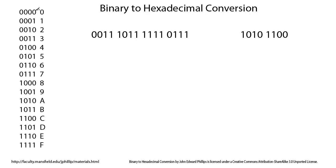You can do this easily by starting with the ones column — just count 0, 1, 0, 1 all the way down. The next column over is the twos column: count with two zeros, two ones, two zeros, two ones all the way down. The next column over is the fours column: count with four zeros, then four ones, four zeros, four ones.